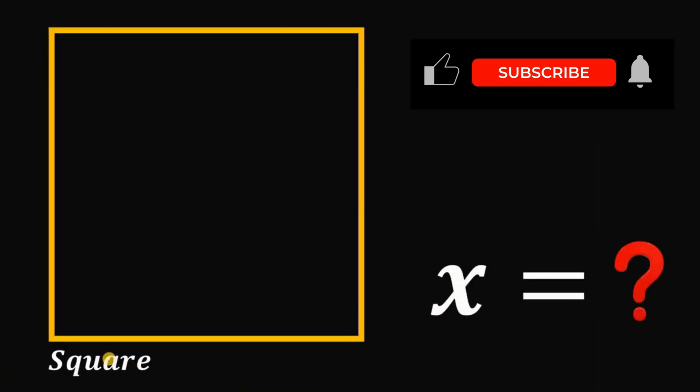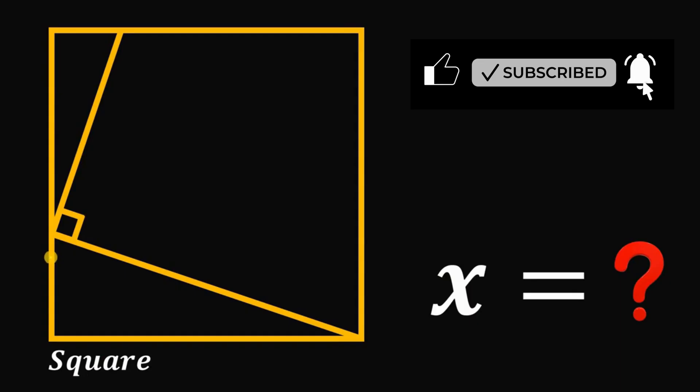Given this square, let's draw two perpendicular segments that attach to the side of this square. And this segment measures three units and this segment measures four units.